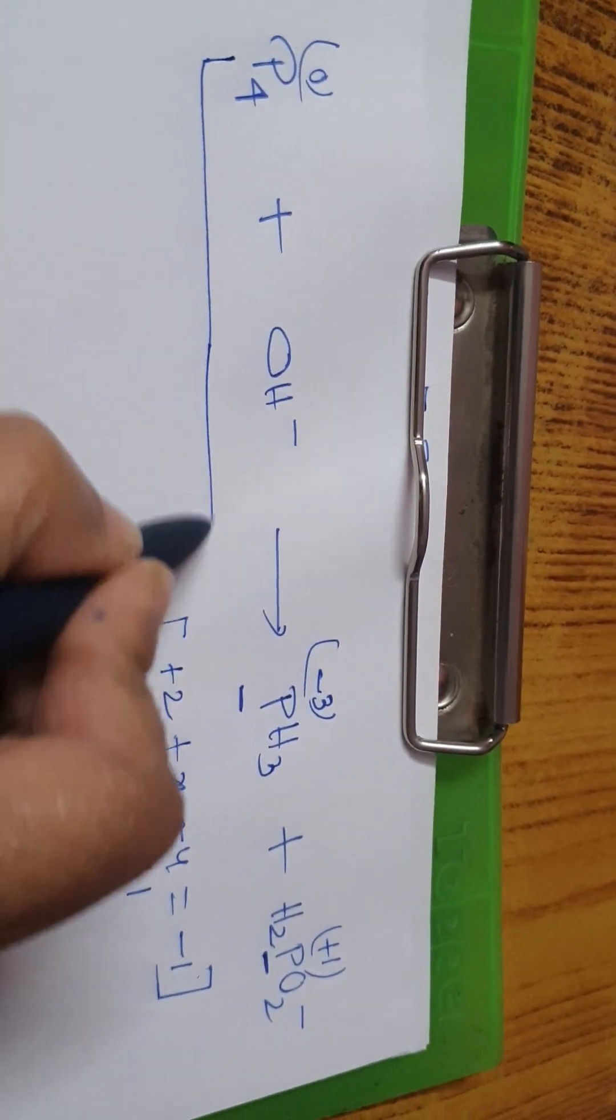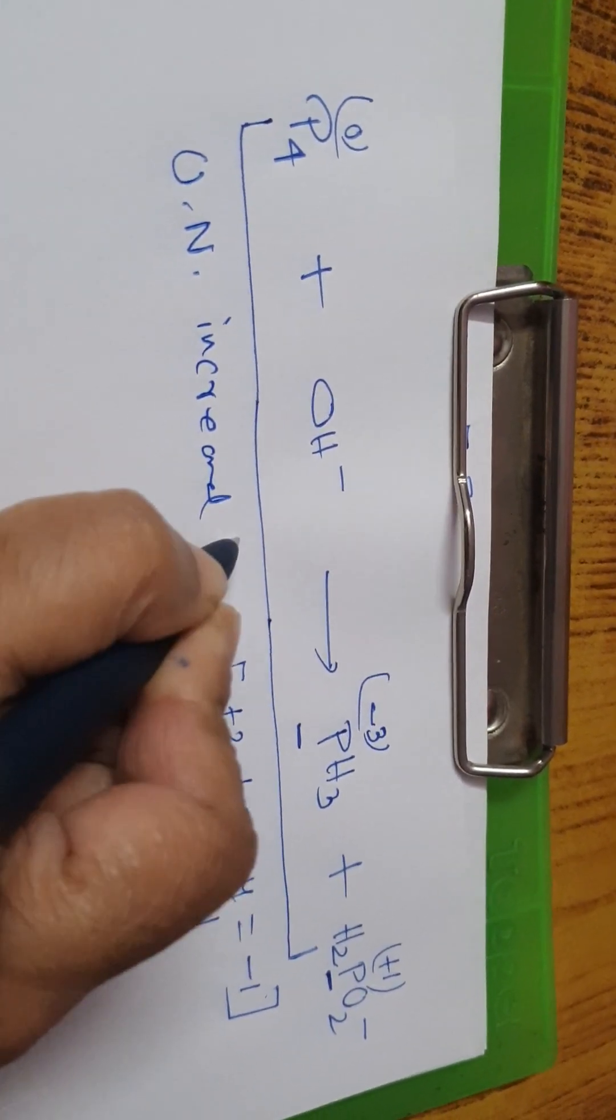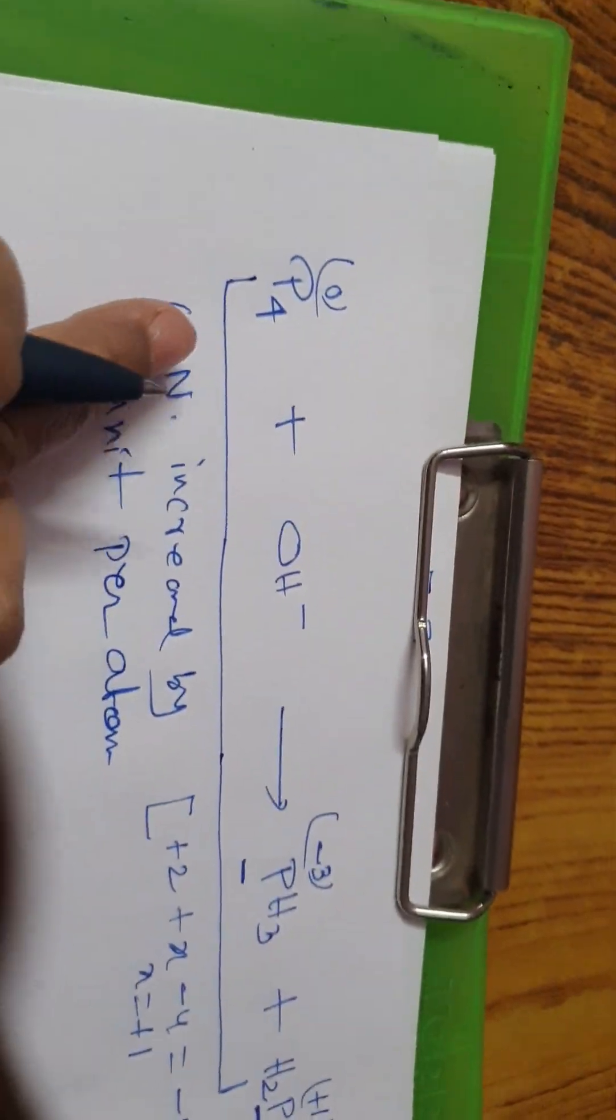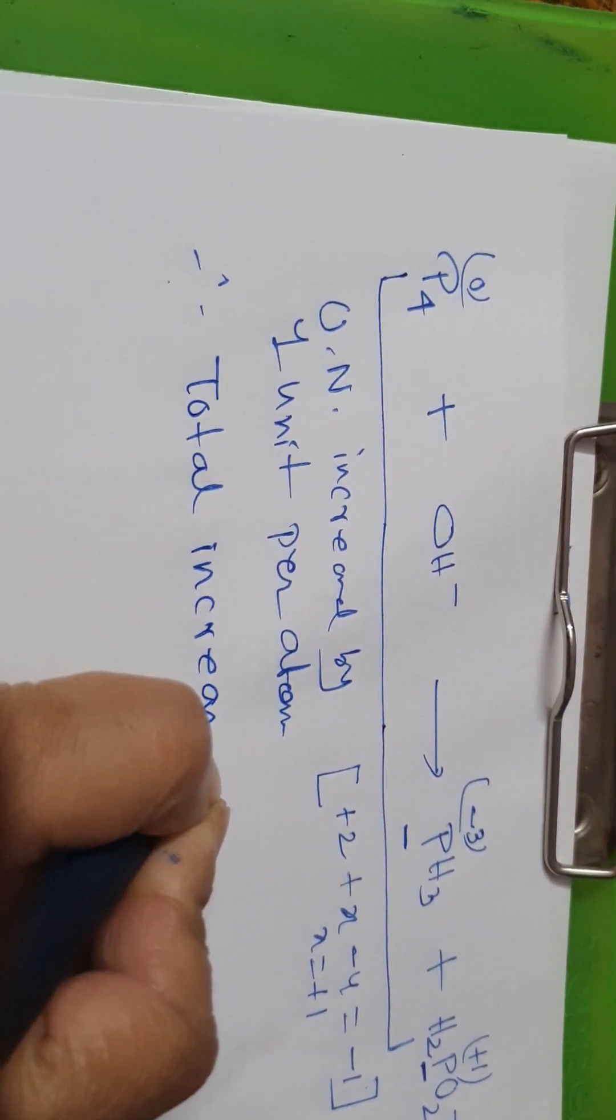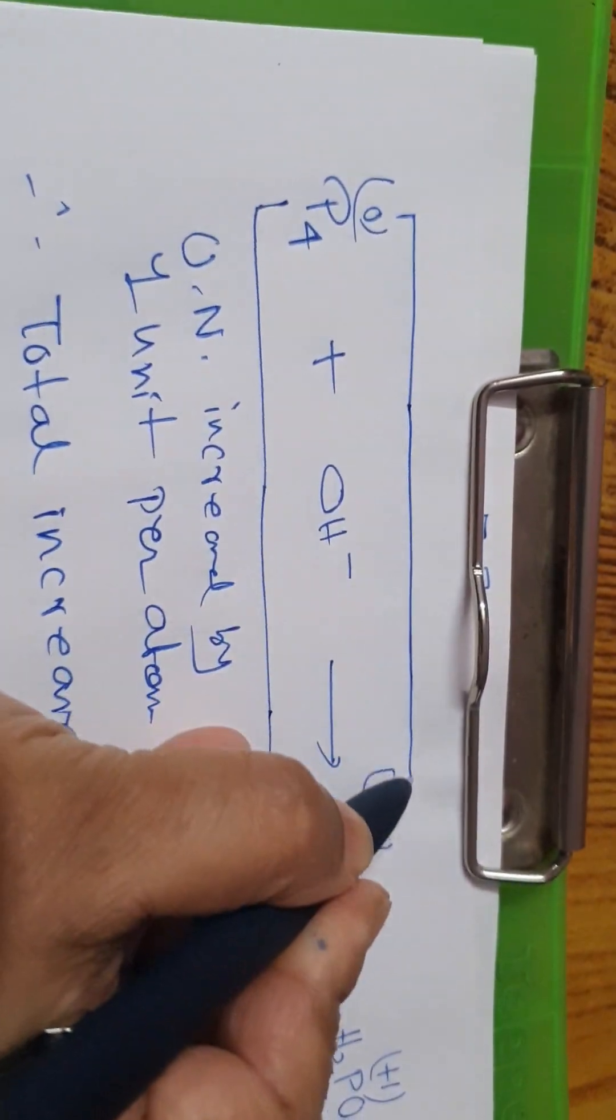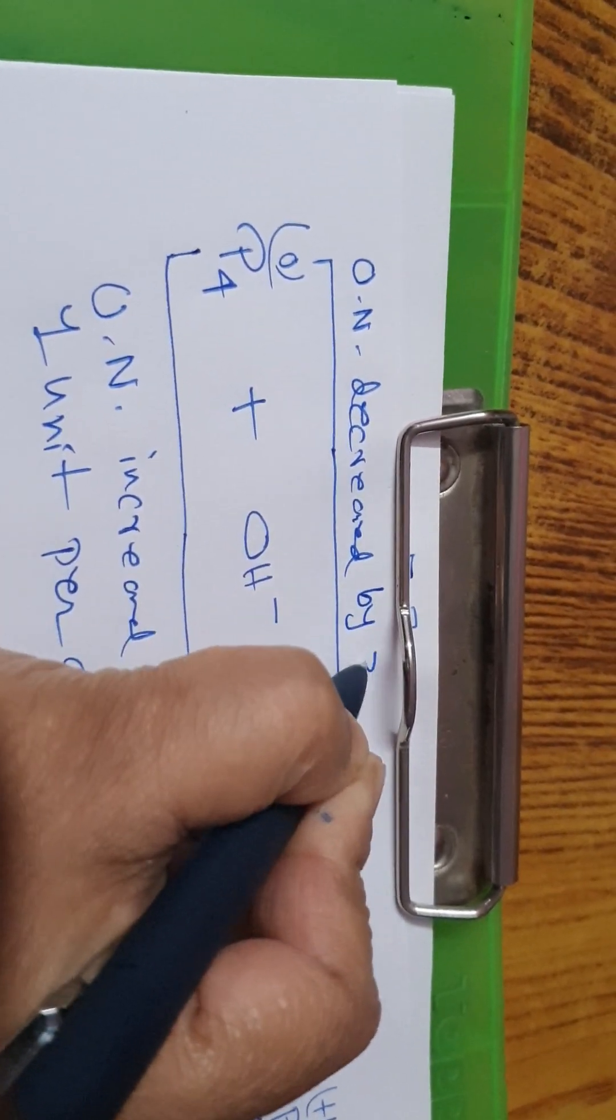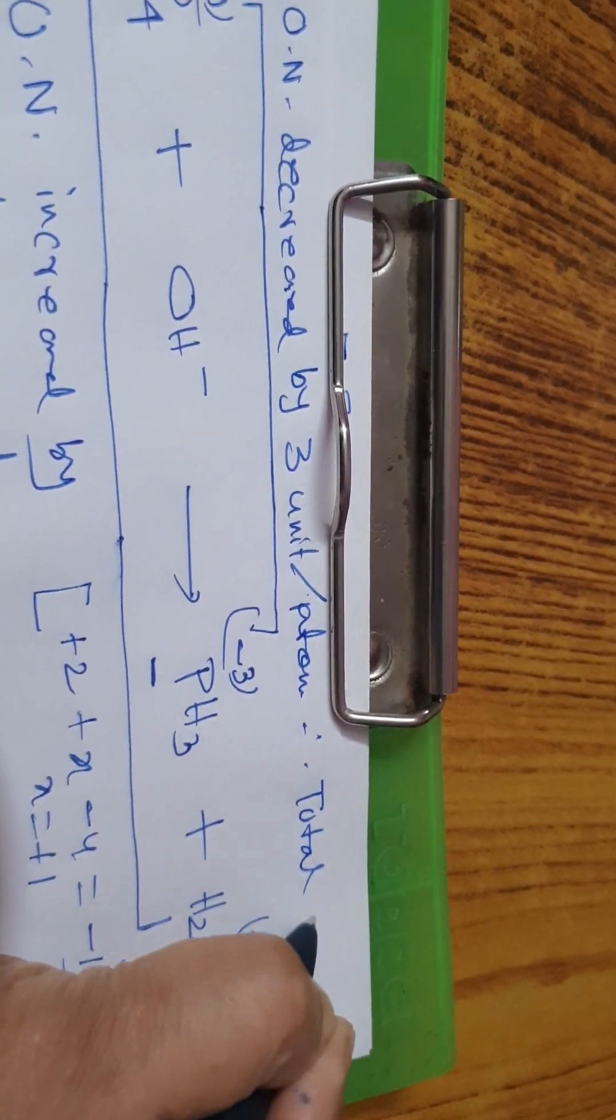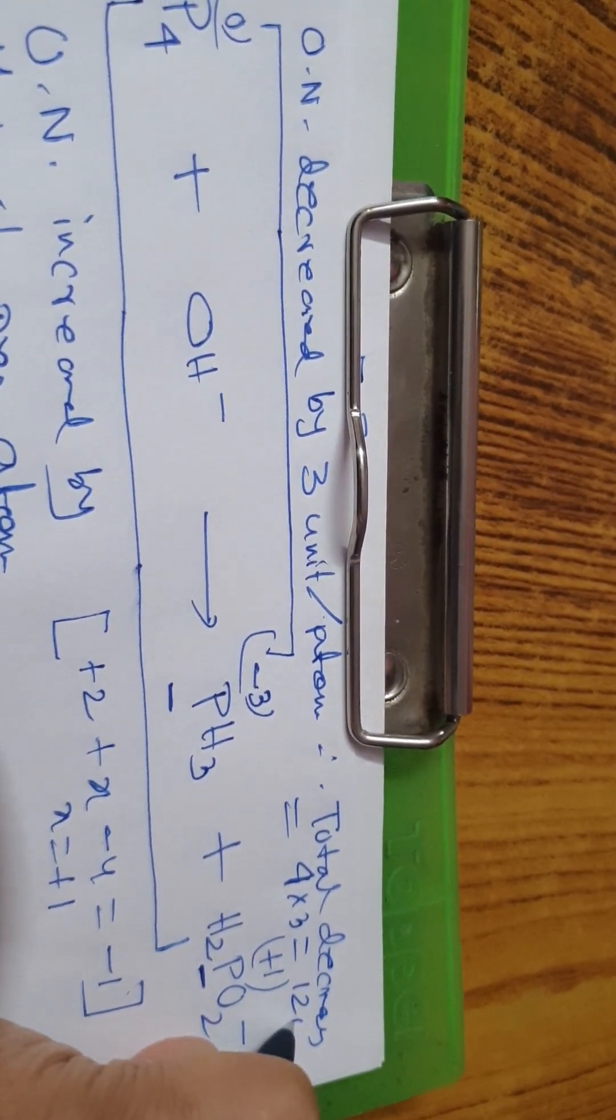Now, what do we have to find out? Look, P4 to H2PO2 minus, that is oxidation number increased by 1 unit per atom. Per atom it's increasing by 1 unit. But here how many atoms are there? There are 4 atoms. So total increase equal to 1 into 4, that is 4 unit.